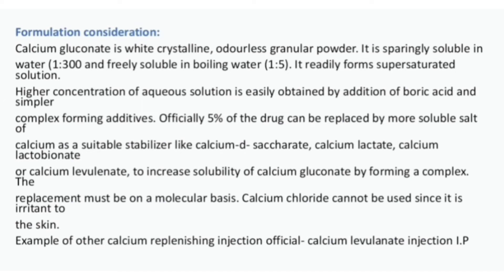Formulation consideration: Calcium gluconate is a white crystalline odorless granular powder. It is sparingly soluble in water (1 in 30) and freely soluble in boiling water (1 in 5). It readily forms supersaturated solutions. Higher concentrations of aqueous solution are easily obtained by addition of boric acid and similar complex-forming additives. Officially, 5% of the drug can be replaced by a more soluble salt of calcium as a suitable stabilizer — such as calcium desaccharate, calcium lactate, calcium lactobionate, or calcium levolinate — to increase solubility of calcium gluconate by forming a complex.